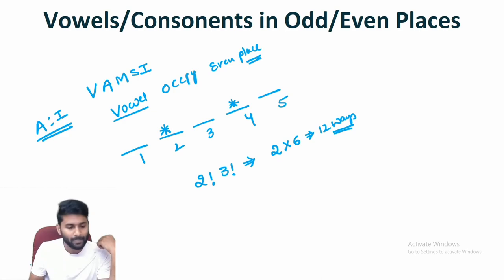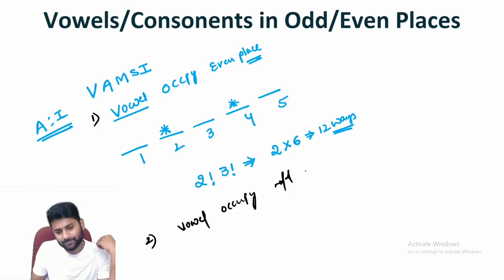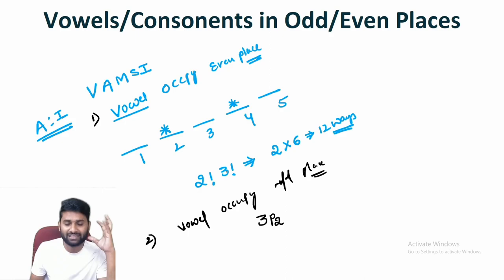Now let's take the same word WOMC but with vowels occupying odd places. We have three odd places, and we have to arrange only two vowels in those three places. That's why the arrangement is 3P2.